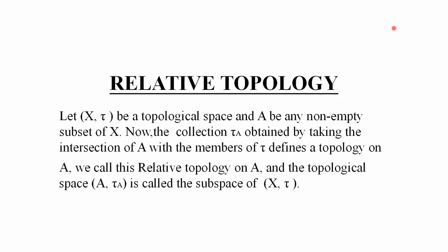First, the definition: Let (X, τ) be a topological space and A be a non-empty subset of X. The collection τ_A, obtained by taking the intersection of A with the members of τ, defines a topology on A. We call this the relative topology on A.